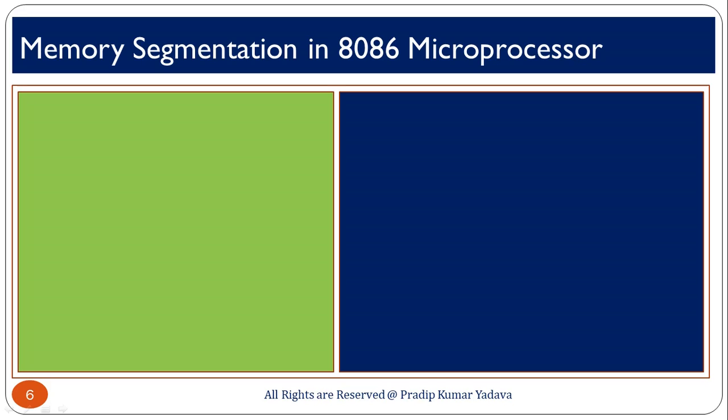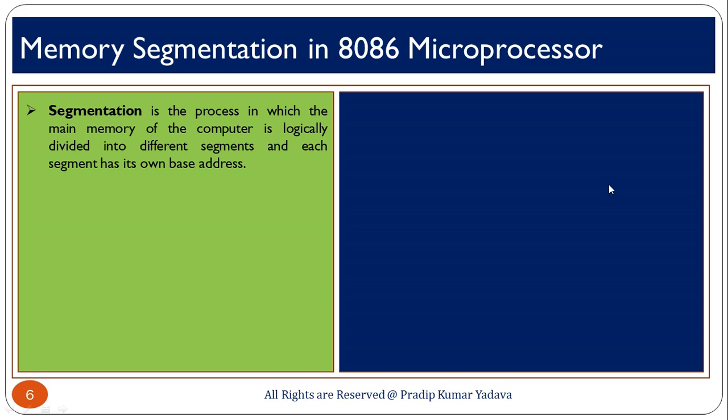The definition is that segmentation is a process in which the main memory of the computer is logically divided into different segments, and each segment has its own base address.